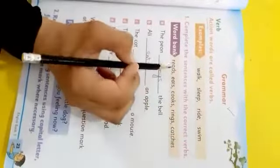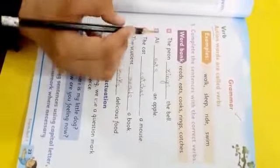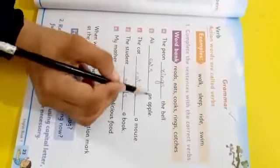We have some words. We put these words in these fill in the blanks. A: The peon (dash) the bell - rings the bell. B: I (dash) an apple - eats an apple. C: The cat (dash) a mouse - catch a mouse.